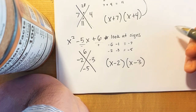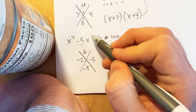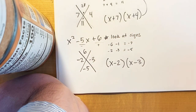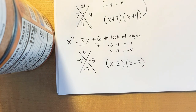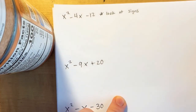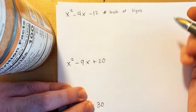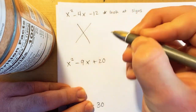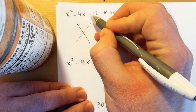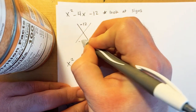Just a reminder: when your last term is positive and the middle term is negative, you know you're going to have minus signs. Moving on to the next example: x squared minus 4x minus 12. We're going to look at our signs. Draw your X, put negative 12 at the top, and negative 4 at the bottom.